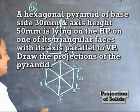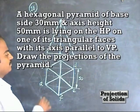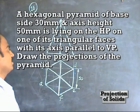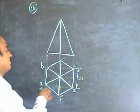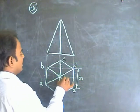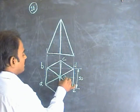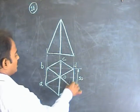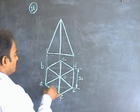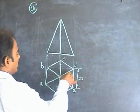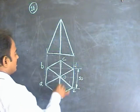We are going to place the hexagonal pyramid with one of its triangular faces on the HP. It is better to start with the second position — that way you will be able to get the triangular face on HP. So here is your hexagon. You have a complete hexagon, and you have to join these lines for the pyramid.